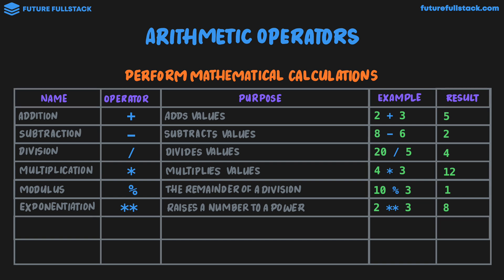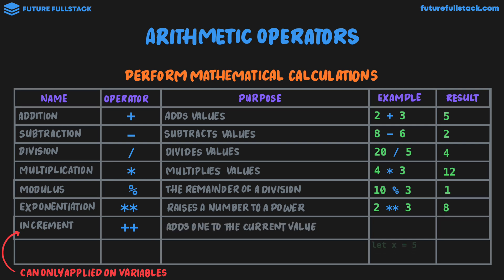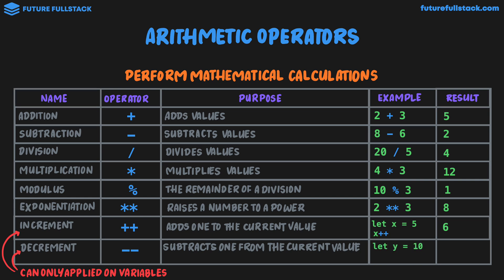We're now going to look at two arithmetic operators that are very useful in JavaScript that you may not have come across before. The first is the increment operator — note this can only be applied on variables. We use the symbol plus plus, which adds 1 to the current value. For example, let x equal 5, then x plus plus gives us a result of 6. The complete opposite is the decrement operator, which also can only be applied on variables. In JavaScript, we write it as two minus signs, and this subtracts 1 from the current value. For example, let y equal 10; if we do y minus minus, the value of y would now be 9.